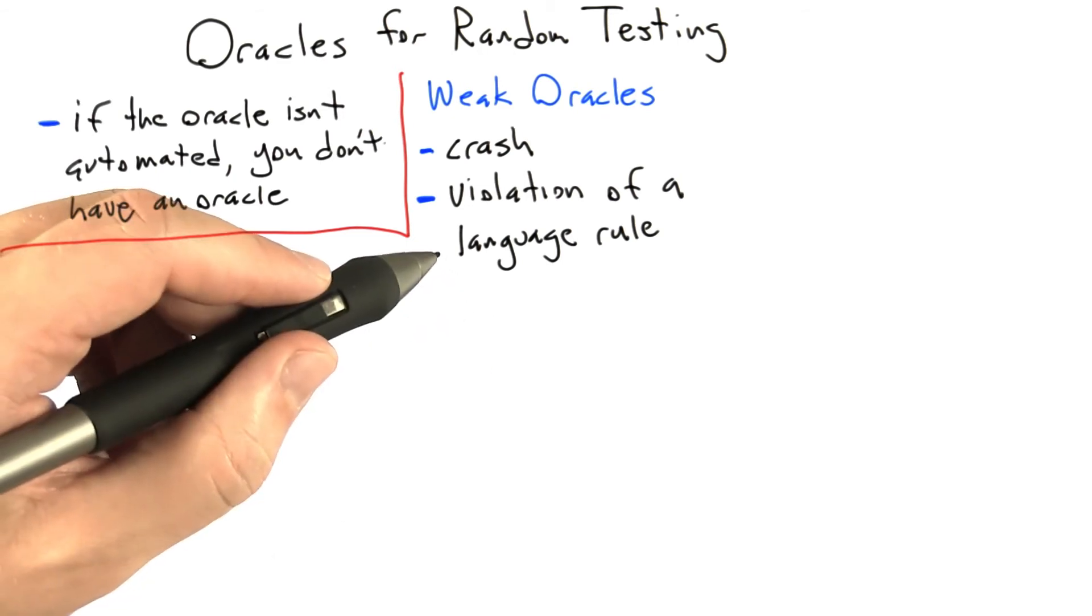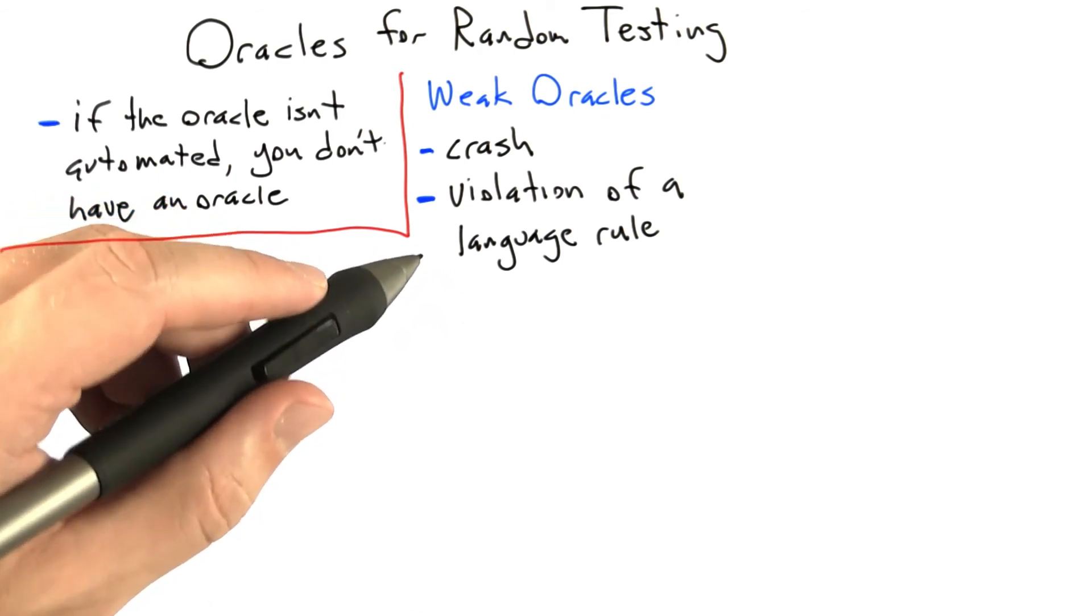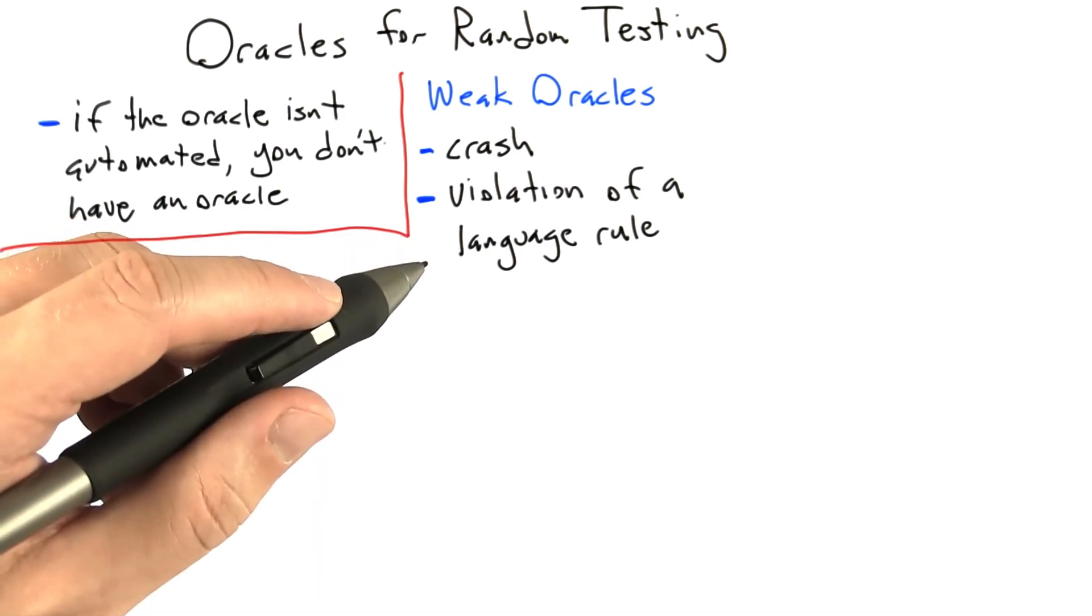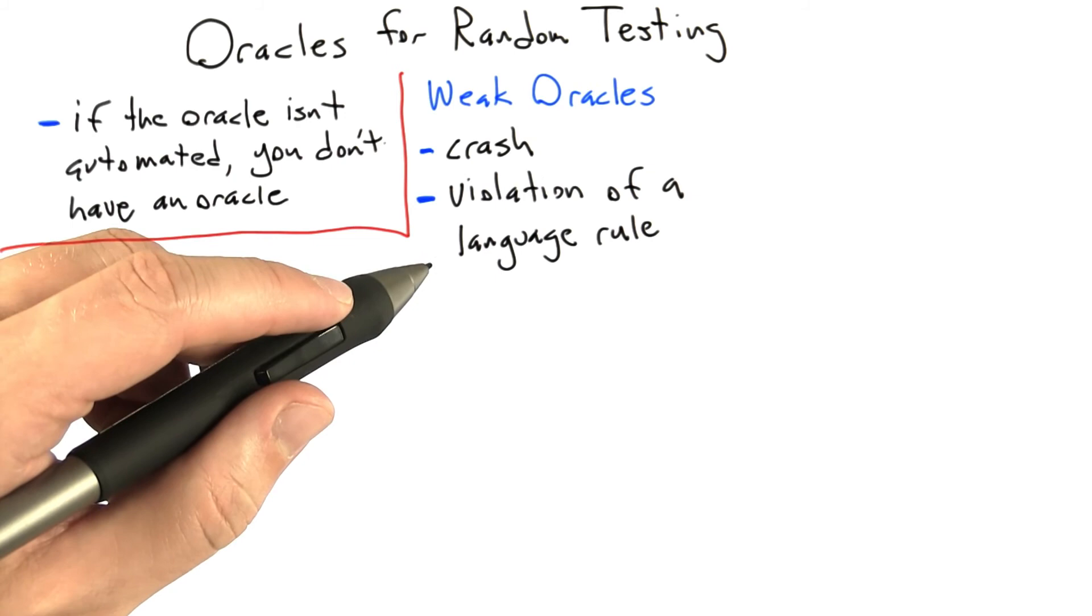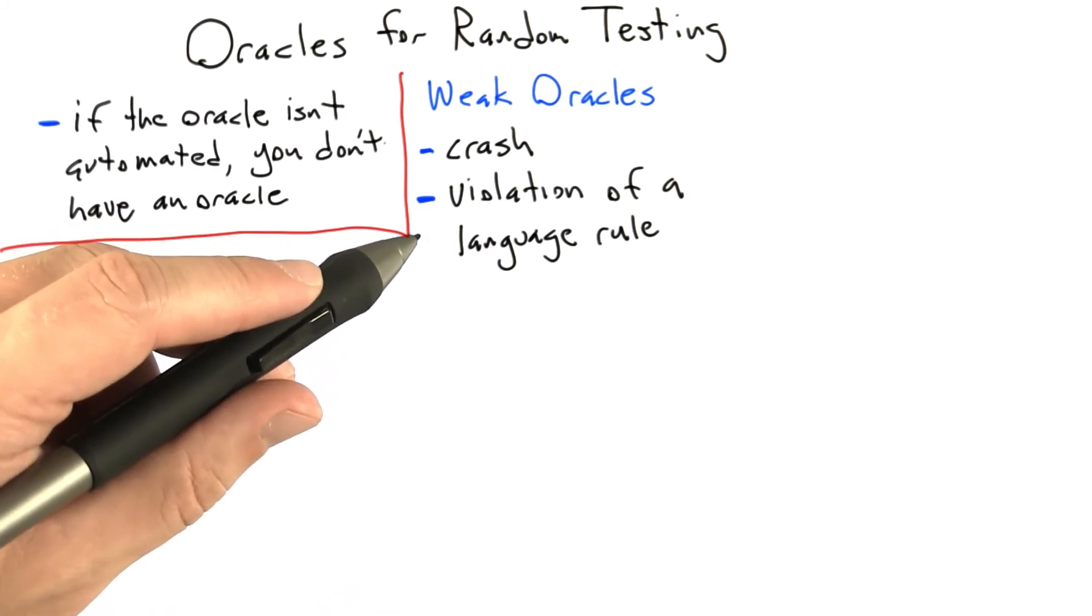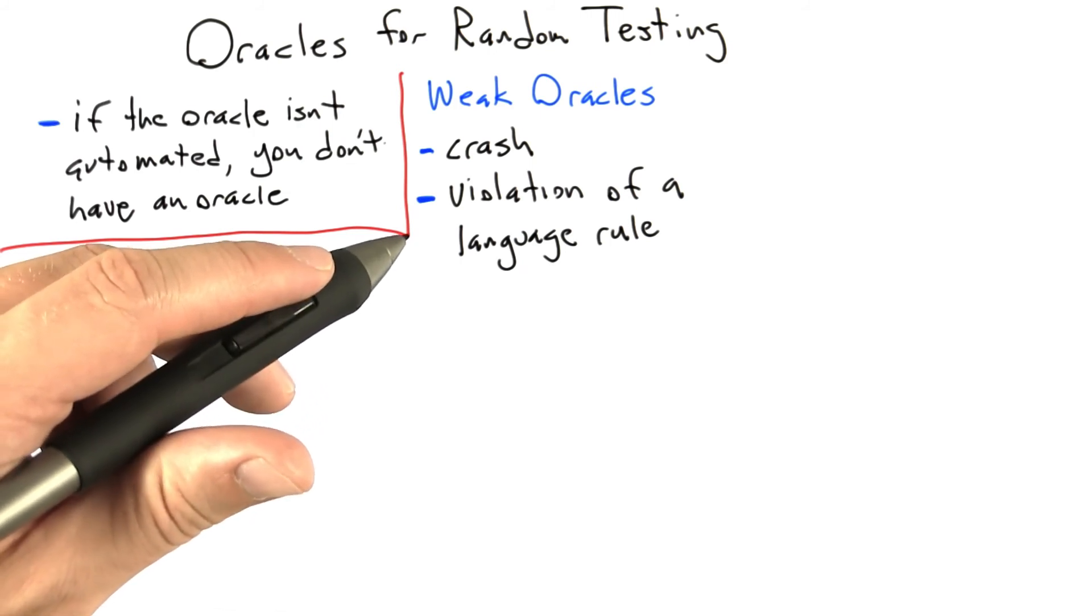So the second most useful weak oracle is violation of a programming language rule. So in Python, if you try to access an element of a list that's out of bounds, and if you don't catch the resulting exception, then your Python program will get terminated. That's an example of the violation of a language rule killing an application and serving as an oracle that tells us that something went wrong.